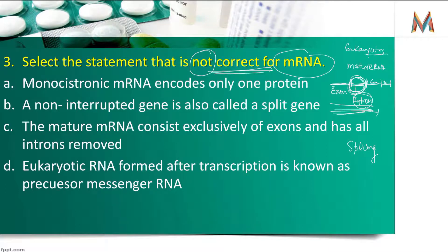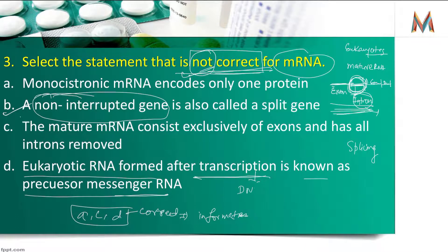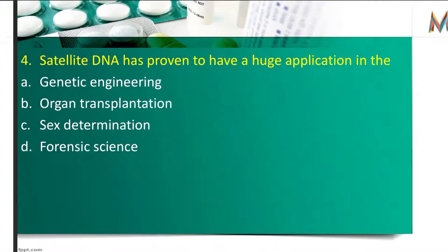Non-interrupted gene वाला statement NOT correct को satisfy कर रहा है, तो वह option eliminate हो गया। बाकी 3 points — A, C, D — correct हैं। EU eukaryotic RNA form after transcription is known as precursor messenger RNA। The mature messenger RNA consists exclusively of exons and has all introns removed। और monocistronic messenger RNA — यानि single one protein code करता है।